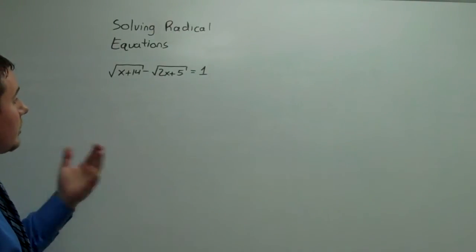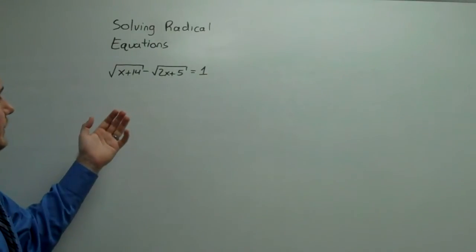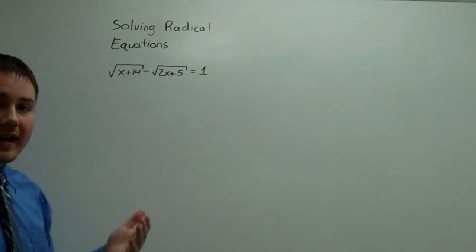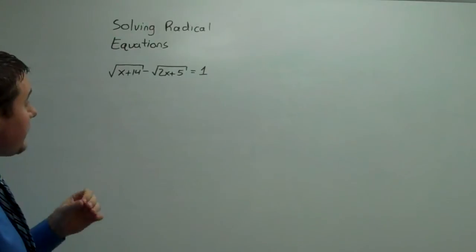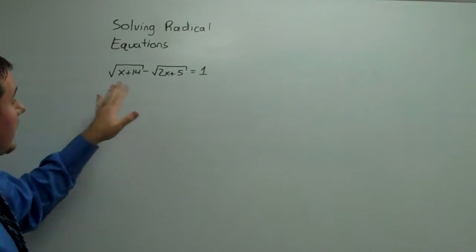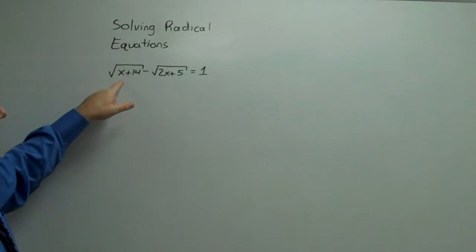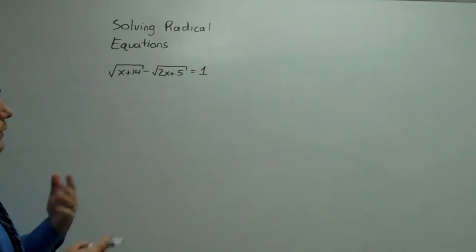Now, I could try and square both sides, but I would still have a radical left over. So instead, what I'm going to do is isolate one radical, specifically this one, and square things.